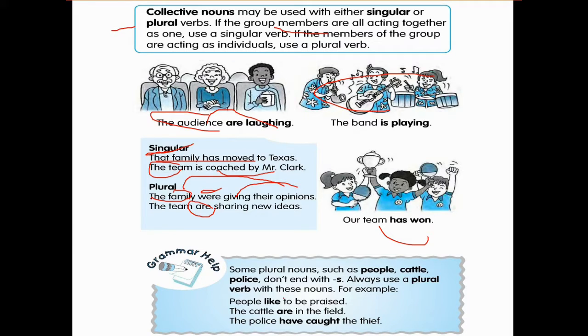So some plural nouns like people, cattle, and police, they don't end with S. You don't have polices or cattles or peoples. We always use a plural verb with these nouns. For example, people like to be praised. The cattle are in the field. The police have caught the thief. The police has caught the thief will not work. Have caught the thief.